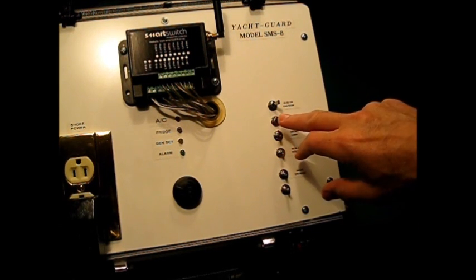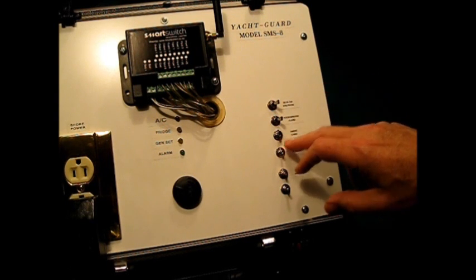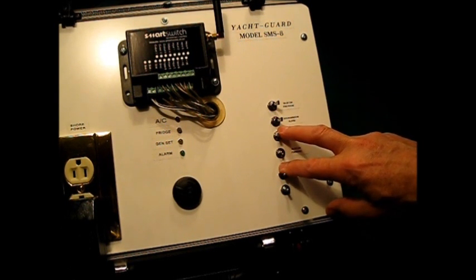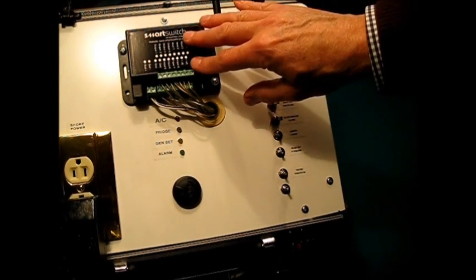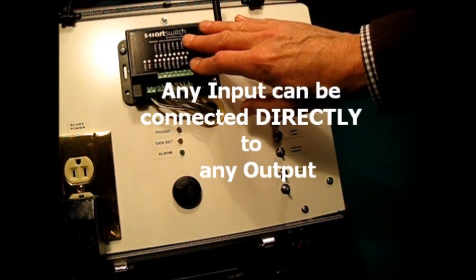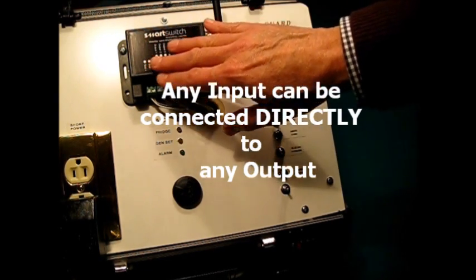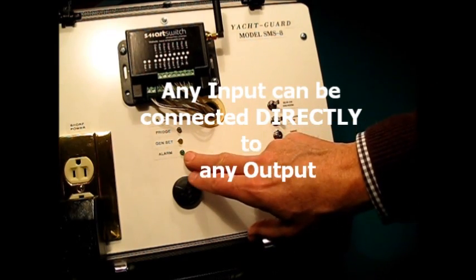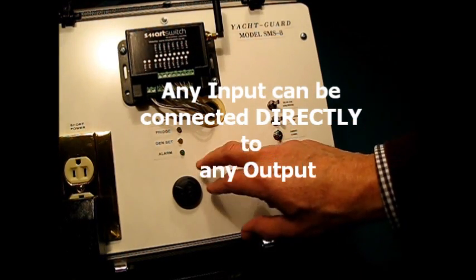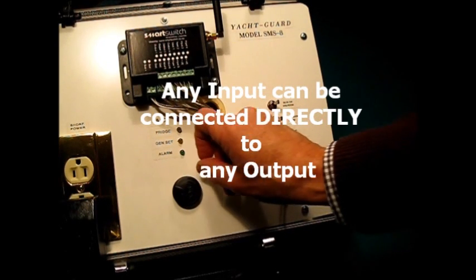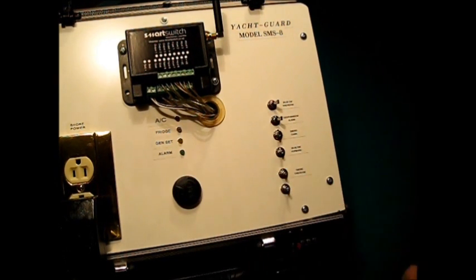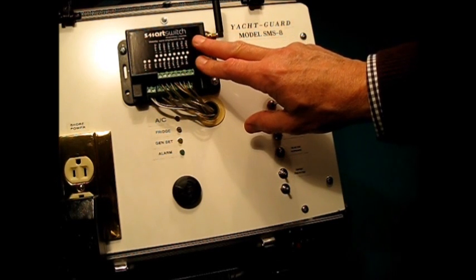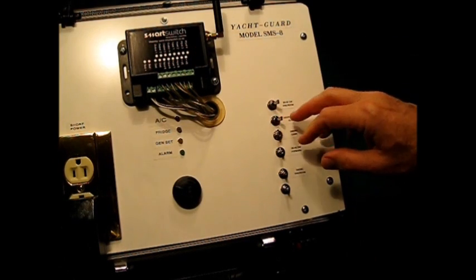There's a difference between the door and window alarm than the other sensors which are wired into the SMS-8. One of the features of the SMS-8 is that any input can be connected directly to any output. So any one of the eight inputs can be connected to any one of the four outputs.